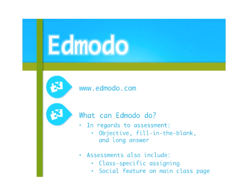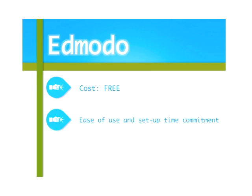Edmodo — I'm sure people are familiar with this, as well as Schoology. It's a Facebook-like interface, and you can do assessment in there as well. They mostly do multiple choice, fill-in-the-blank, and long answer. You can do class-specific assignments — one quiz for first period and a completely different quiz for second period so they don't know what's coming. It has a social feature too, and it is totally free right now. Kids can actually comment on the quiz, so when I post a quiz I get informal feedback right away.